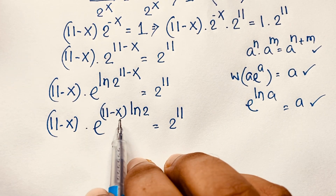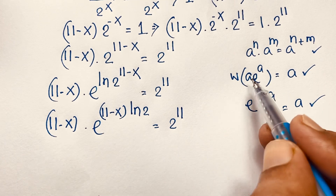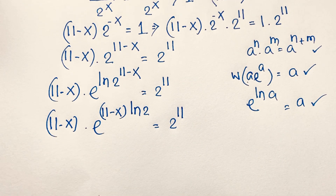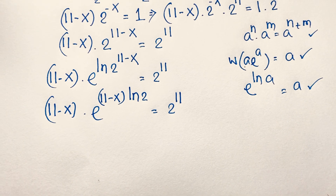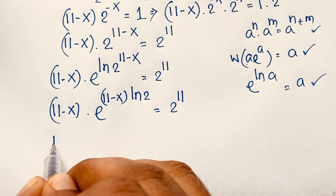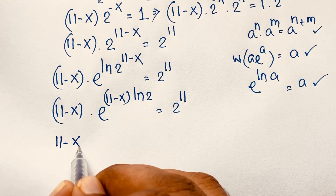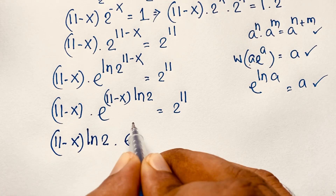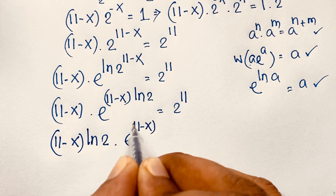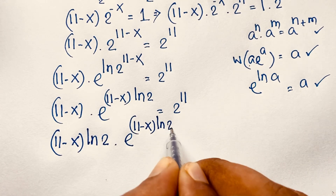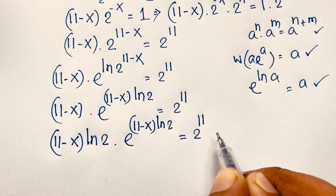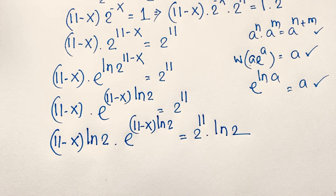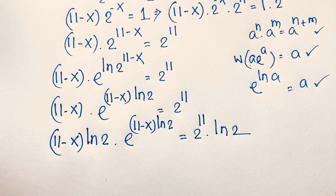We have (11 minus x) and (11 minus x) times ln 2 — both are the same expression. We need to multiply both sides by ln 2 to complete the Lambert W setup. So the expression becomes (11 minus x) times ln 2 times e to the power of (11−x) times ln 2, equals 2^11 times ln 2.